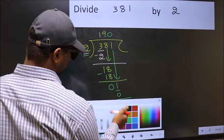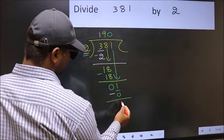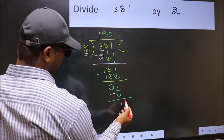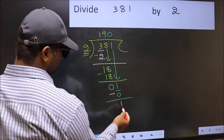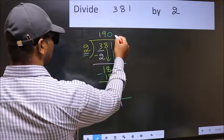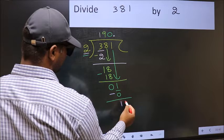Now you should subtract. 1 minus 0, 1. Now over here, we did not bring any number down. And 1 is smaller than 2. So, now you can put a dot and take 0 here.